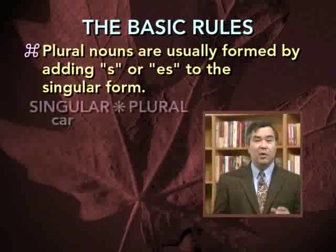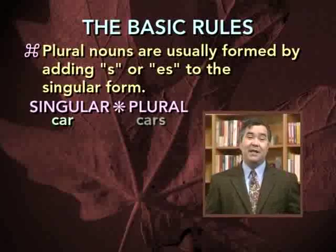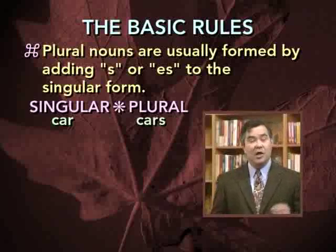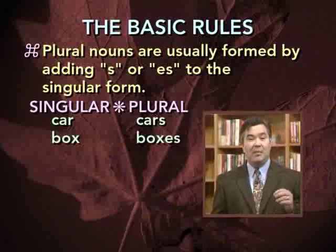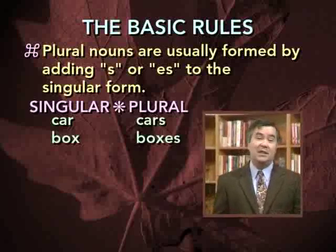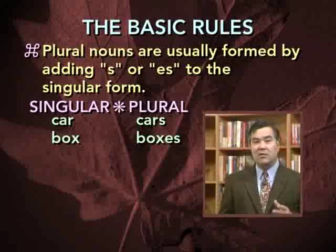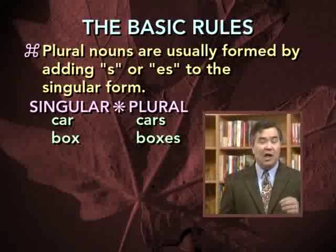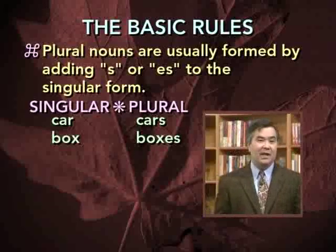So, for example, the word car, which is singular, becomes plural simply by adding the letter S at the end — cars. The word box becomes plural by adding ES at the end — boxes. Simply adding the letter S at the end would create a word that's rather awkward-looking and difficult to pronounce. That's why words that end in X are generally made plural by adding ES rather than simply S.